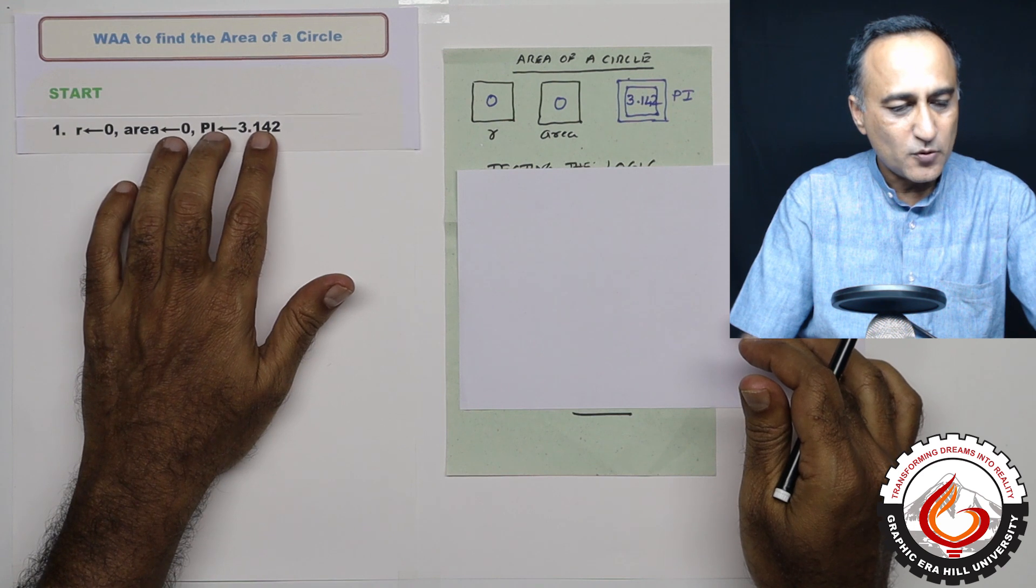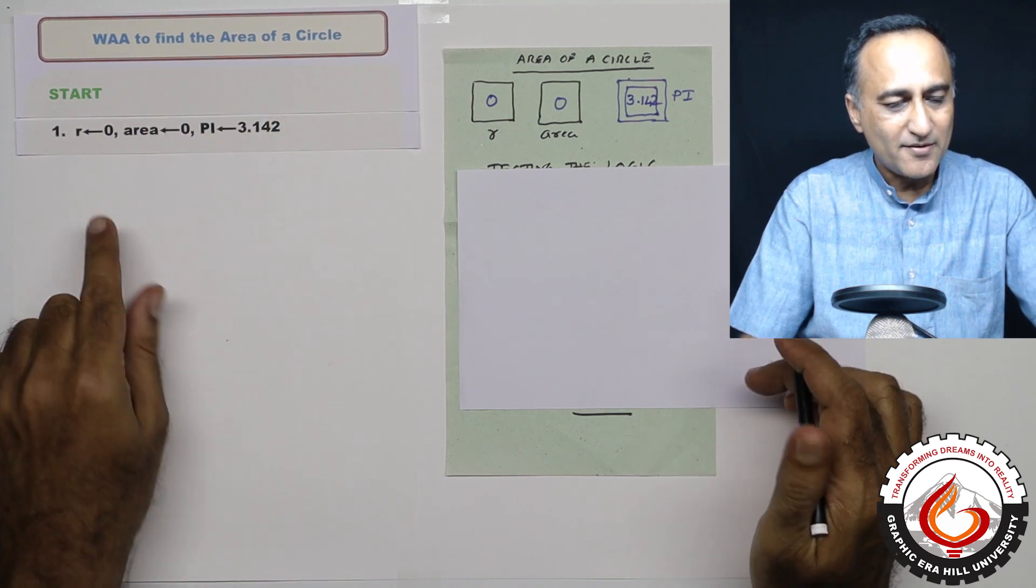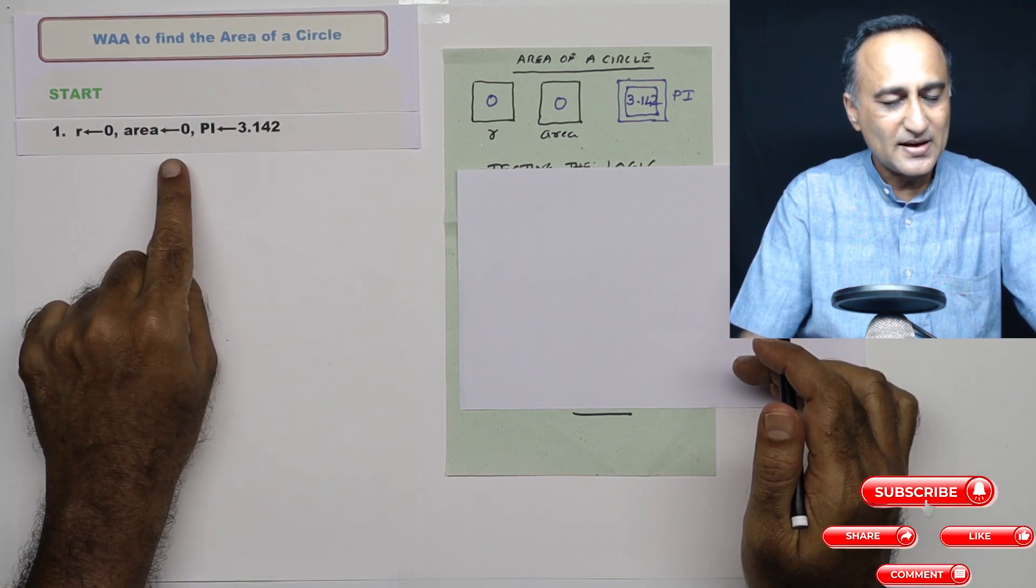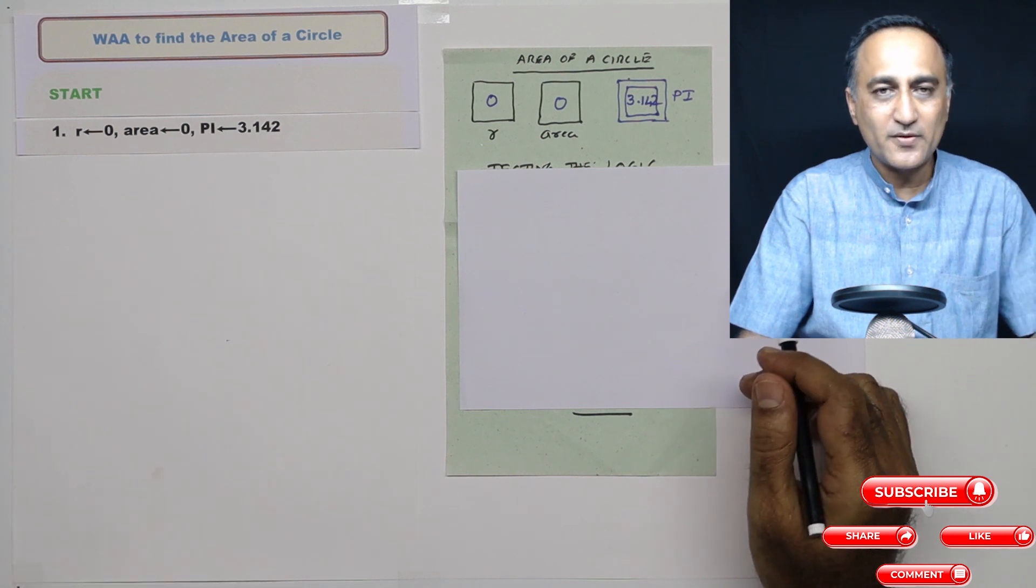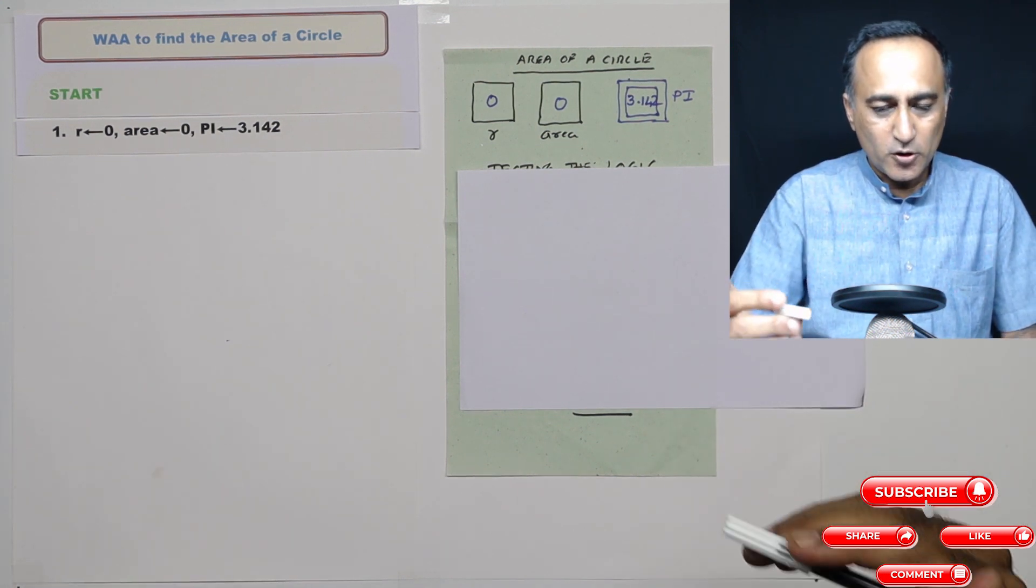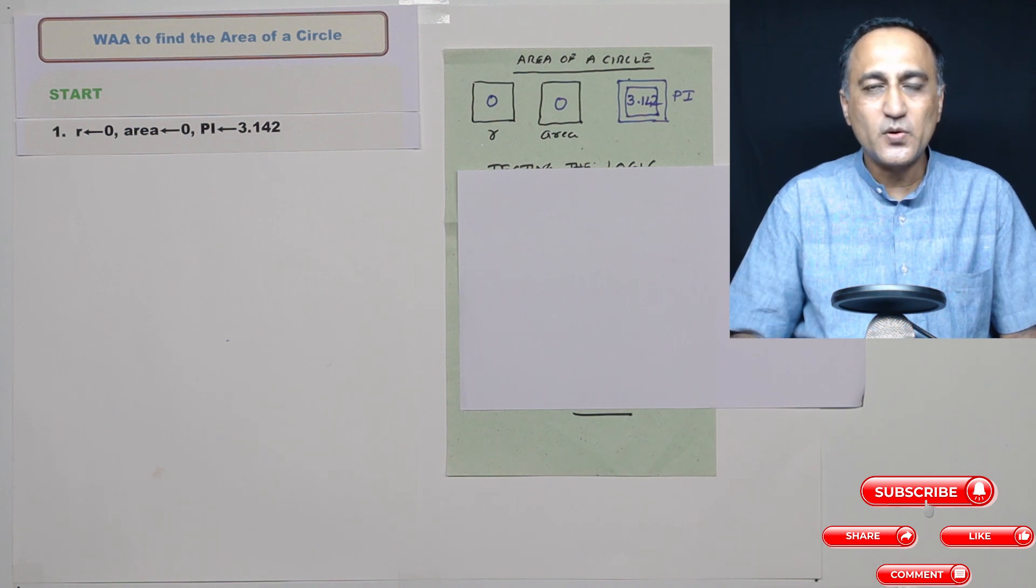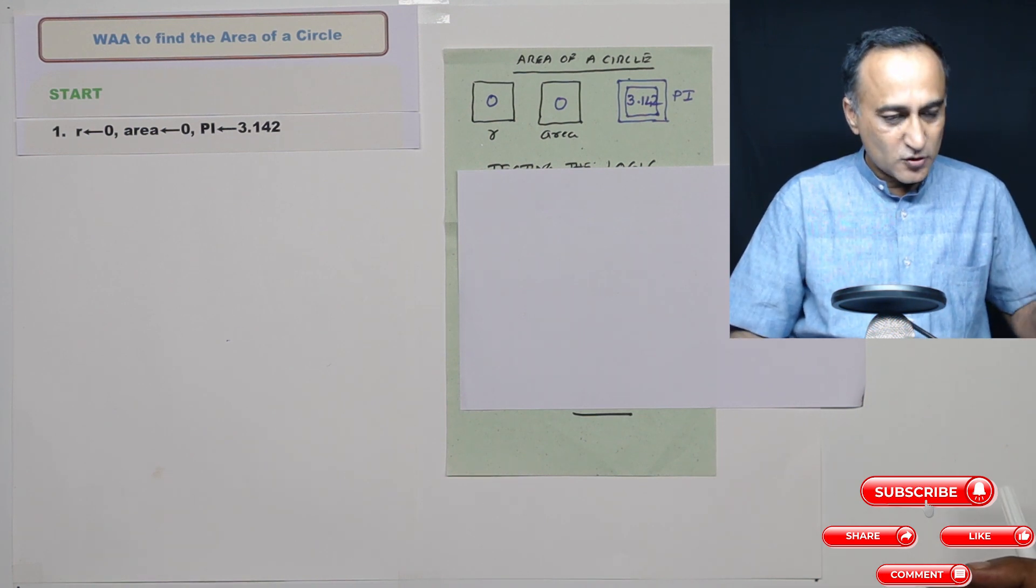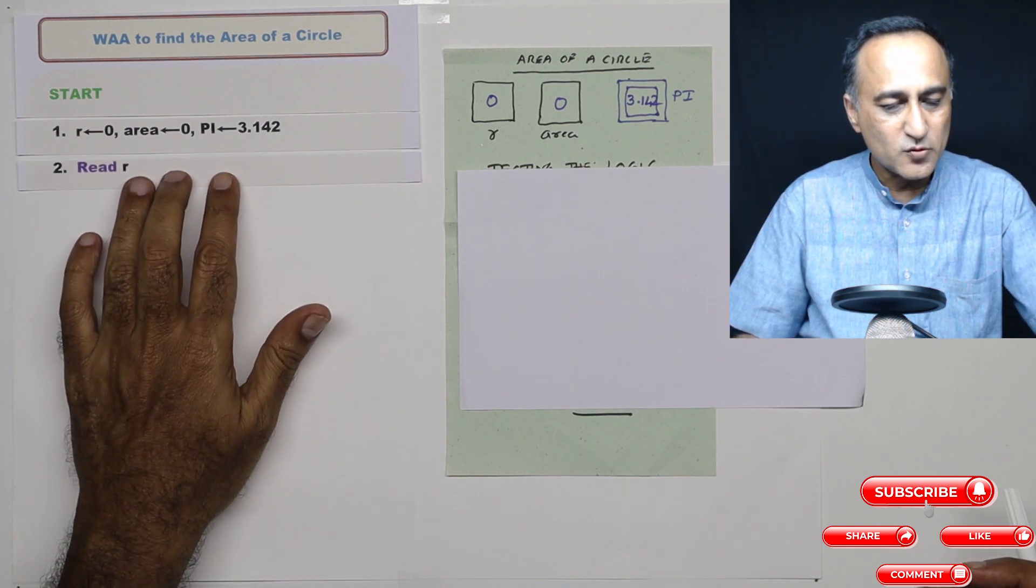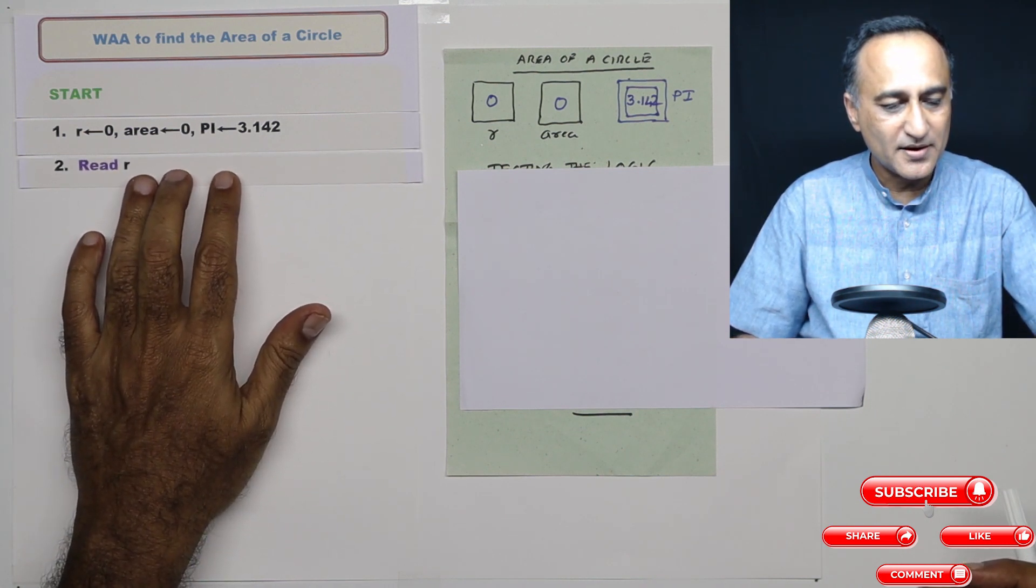So in this step, what is going to happen here is you're going to have radius as zero, area as zero, and pi as 3.142. Now in order to calculate the area, it is required that the user provide you with the value of the radius. So step number two, what I'm going to do here is I am going to ask the user to enter the value of the radius.